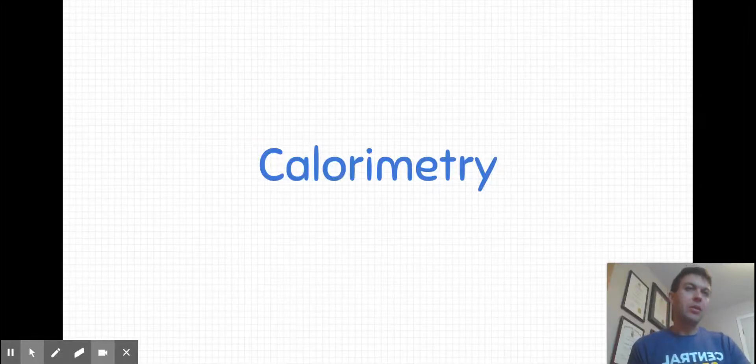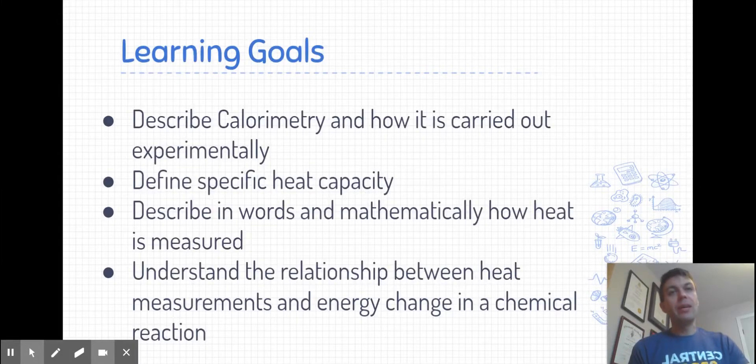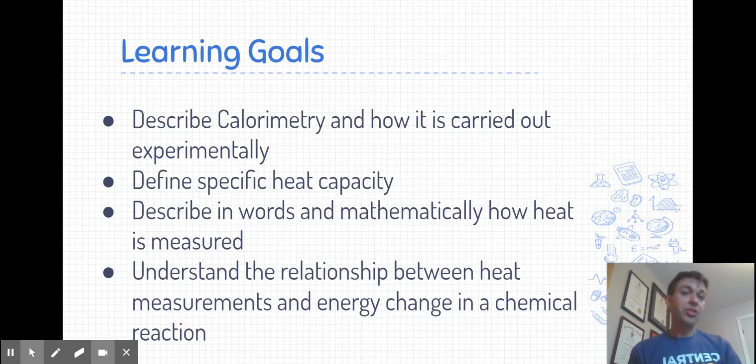Welcome everyone to our video on calorimetry. In this video we are going to discuss how calorimetry is carried out experimentally and exactly what calorimetry is. We're going to define a measurement called specific heat capacity. We're going to describe how heat is measured both in words and using a mathematical equation. And then we're going to touch upon the relationship between these heat measurements and the energy change in chemical reactions. And that's a concept that we're going to explore more fully in future lessons.